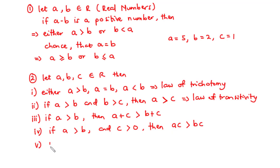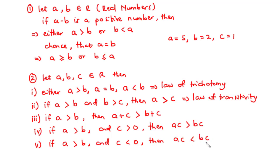Five: for this same set of values, if c is negative one, then a times c becomes negative 5, and negative 5 is less than 2 times negative 1 which is negative 2. So when c is negative, the inequality reverses.